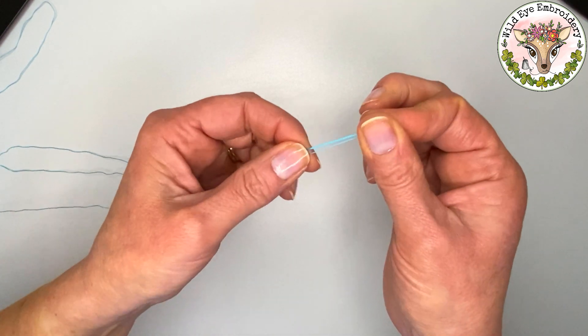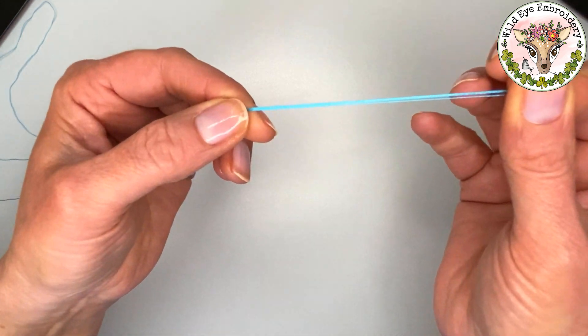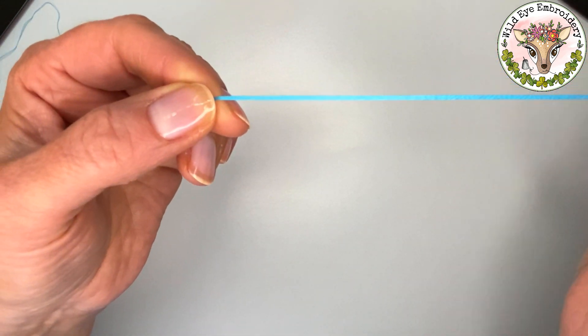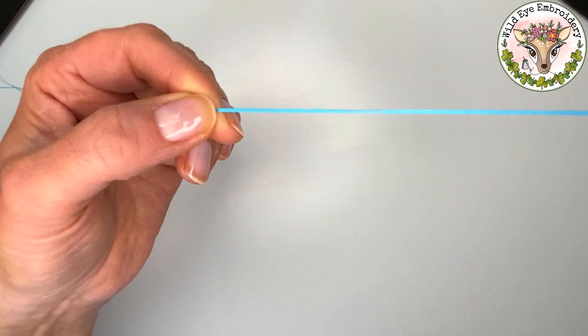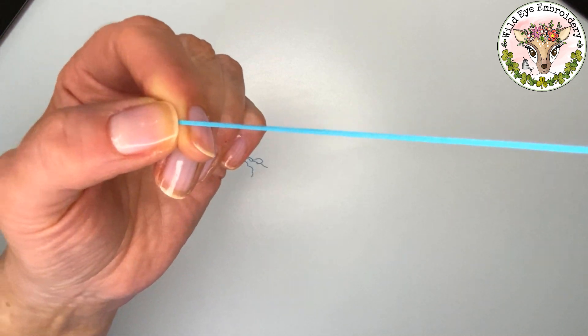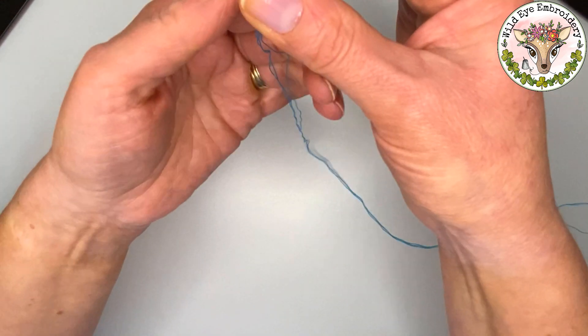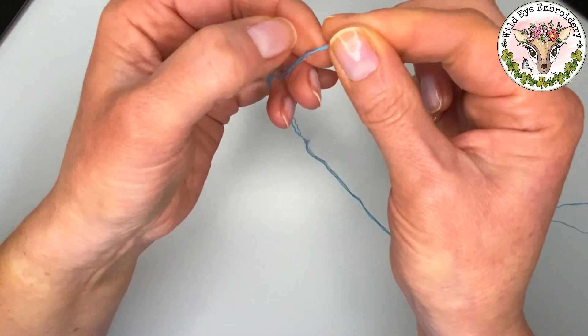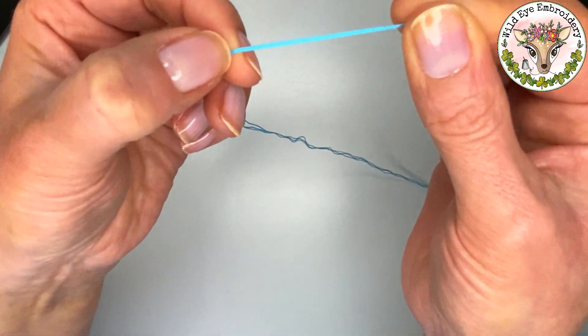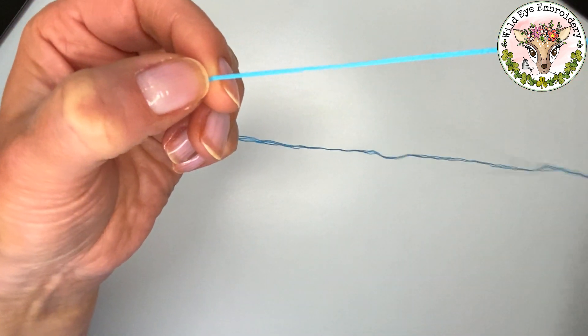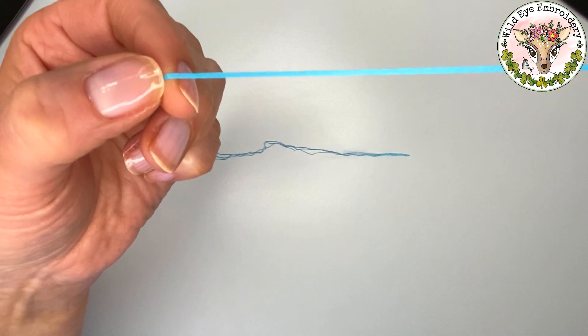And then what we do is put a little tension between your two fingers and just gently pull the thread, slide it through your fingers. Just a little tension. And this is going to flatten the thread. Now I want to turn the thread over to the opposite side. And we're going to do the exact same thing again. Just lightly pull that thread under tension through your two fingers.